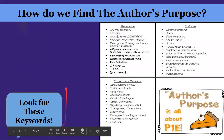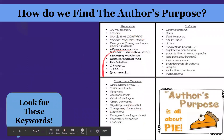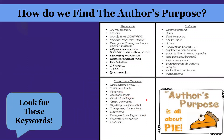We can also look for keywords — different keywords for each purpose. For persuade: 'in my opinion,' letters, words that compare like good, better, or best. For inform: charts, data, graphs, text features, and what you might think of as hard facts — those are included in pieces meant to inform. For entertain: words like 'once upon a time,' talking animals, rhyming, jokes or humor, or a lot of dialogue — those hint that it's a story.